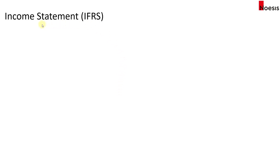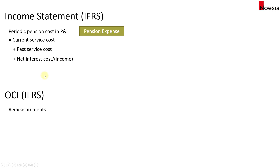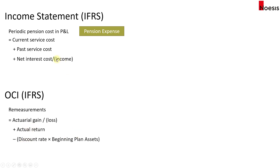Under IFRS, what we recognize as part of the pension expense — the periodic pension cost in P&L — is the service cost for both current and past, plus the net interest cost or income. If it's income, we denote it as a bracket, meaning minus. For OCI, we have the remeasurements, which include the actual gain or loss, plus the actual return minus the interest income. The interest income is the discount rate multiplied by the beginning plan assets.